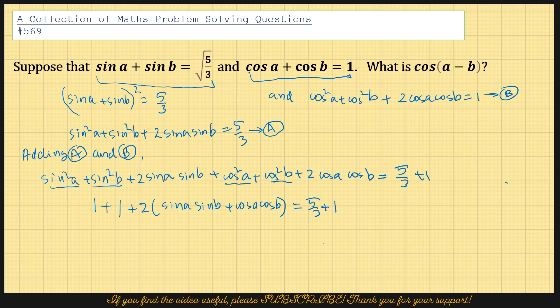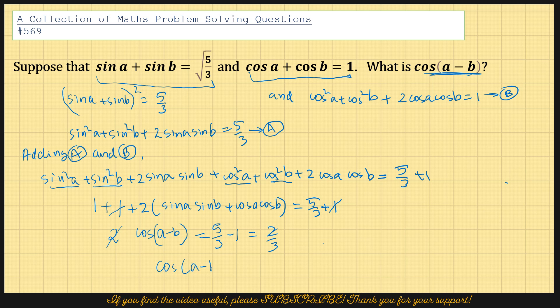One of the ones goes away, so it would be 5 out of 3 minus 1. And sin a sin b plus cos a cos b is cos of a minus b. So twice of cos of a minus b equals 5 out of 3 minus 1, which equals 2 out of 3. The twos cancel and we're left with cos of a minus b equals 1 out of 3, and that's the answer.